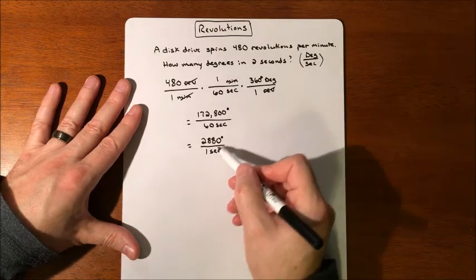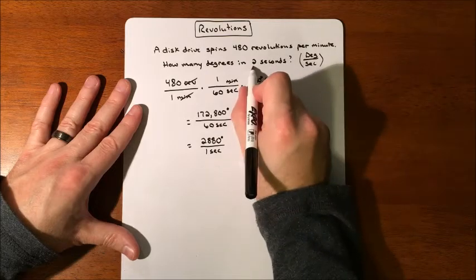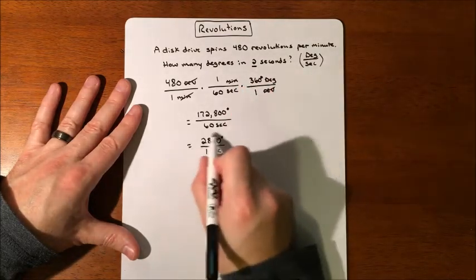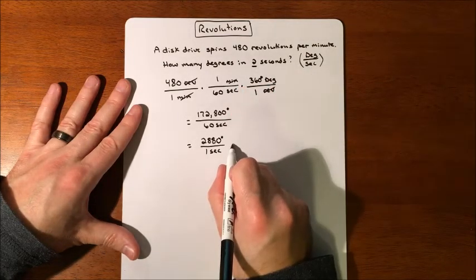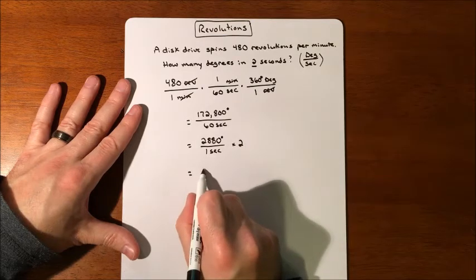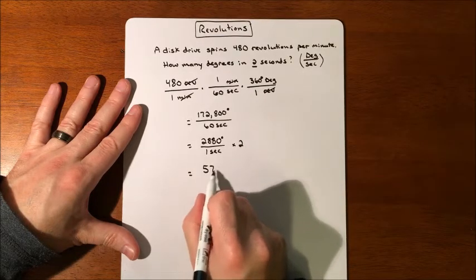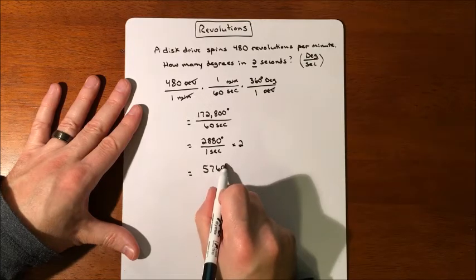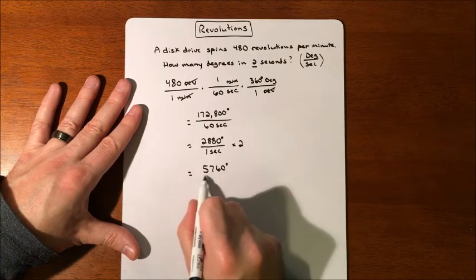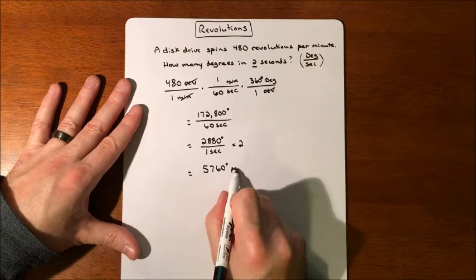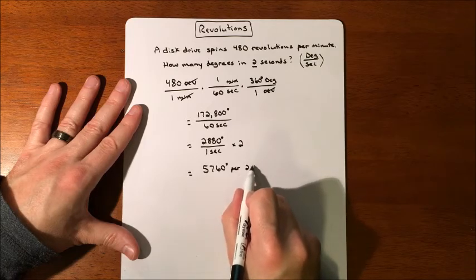So that is what we wanted, but we want two seconds, so we'll just take that answer, multiply it by two, and that gets us 5,760 degrees for two seconds.